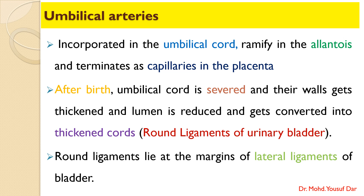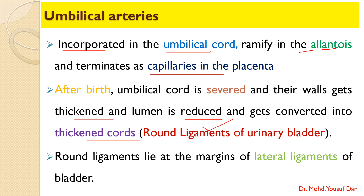As soon as they reach the umbilicus, they pass out through the umbilicus and get incorporated in the umbilical cord. Through the umbilical cord they reach the placenta, where the umbilical arteries ramify in the allantois and finally terminate as capillaries. After birth, the umbilical cord is severed, their walls get thickened, their lumen is reduced, and they convert into cord-like structures now called the round ligaments of the urinary bladder.